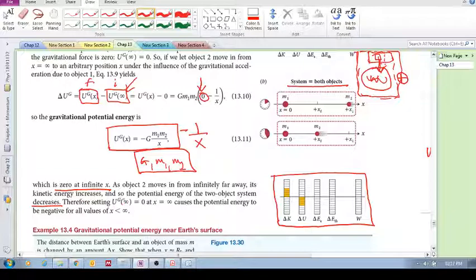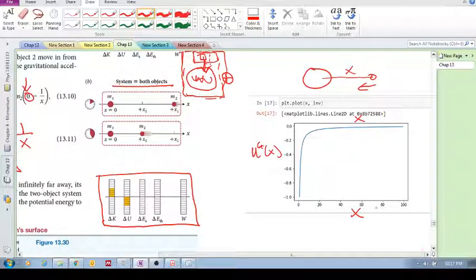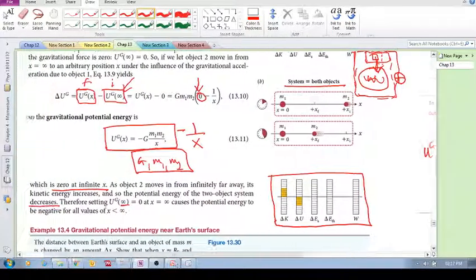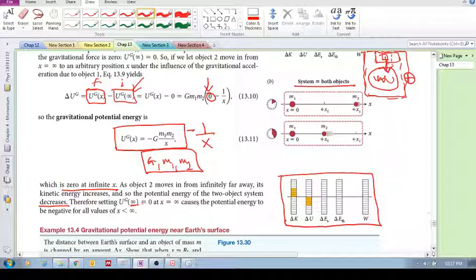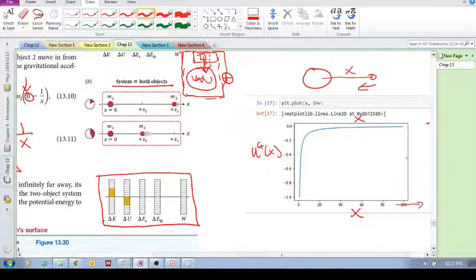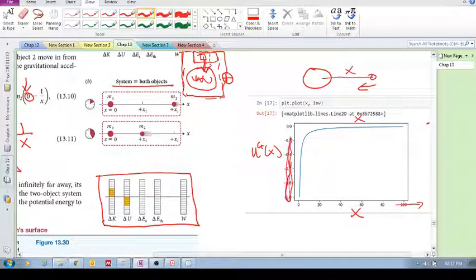So, this is what it's saying over here. Therefore, setting potential energy at an infinite distance equal to zero—as we keep increasing our distance, the potential energy is basically zero. At X equals zero causes the potential energy to be negative for all values of X smaller than infinity. So, all of these values over here, we have UG becoming more and more negative. Like I said, ignore the values. I just wanted you to see what the shape looks like.